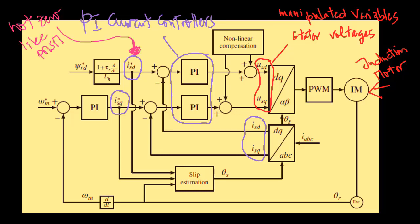However, the difference might be the reference signal to isd that is not zero but a constant depending on the operating condition of ψrd, that is the rotor flux in d-axis.